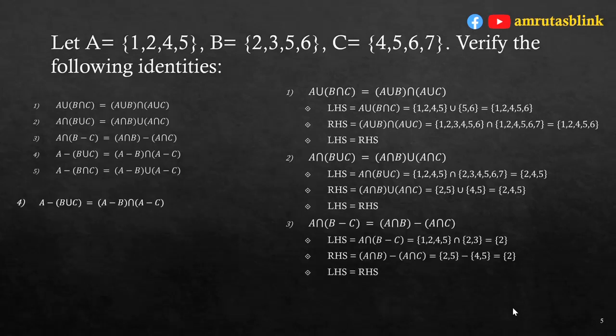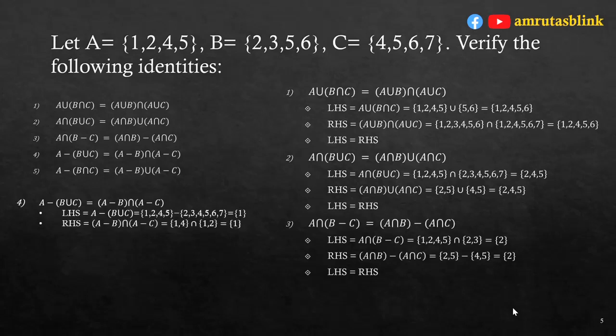For the fourth identity: A-(B∪C) = (A-B)∩(A-C). LHS: B∪C = {2,3,4,5,6,7}, so A-(B∪C) = {1,2,4,5} minus {2,3,4,5,6,7} = {1}. RHS gives the same result, so the fourth identity is verified.